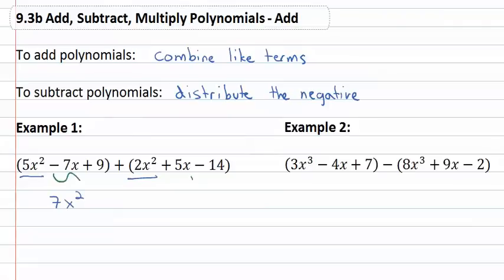There's also an x in both polynomials, so negative 7 plus 5 is negative 2 of these x's. There's also a 9 and a negative 14, the constants with no variables are like terms. 9 minus 14 is negative 5. We have now added the polynomials together to get 7x squared minus 2x minus 5.